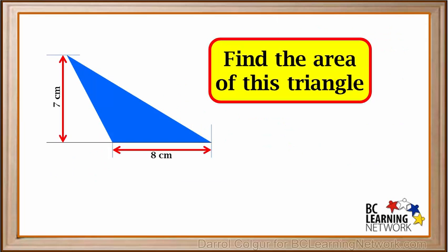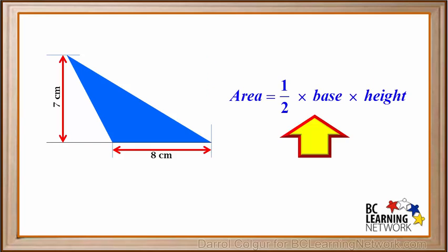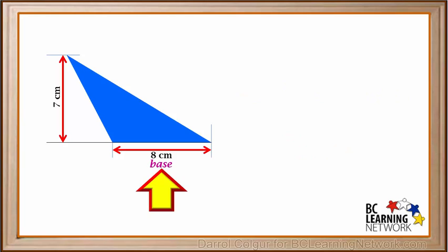Let's do another example. We're given this blue triangle, which leans to the left, and the measurements are shown on the diagram. We're asked to find the area of this triangle. The formula for the area of a triangle is area equals a half times the base times the height. We can call this side the base, since it's on the bottom and we're given its length. The height is the distance from the base to the top using a line that is perpendicular to the base. In this case, it is the 7 centimeter arrow which was shown on the diagram.